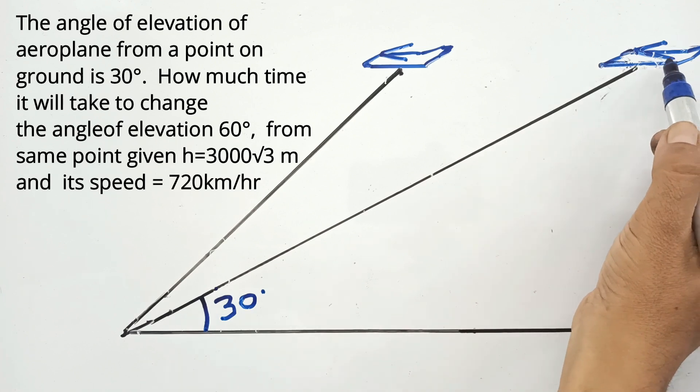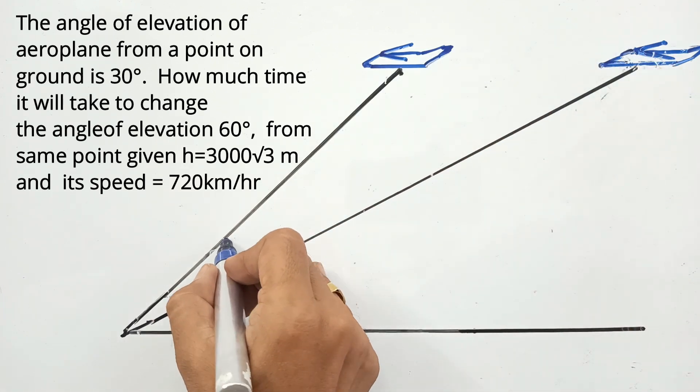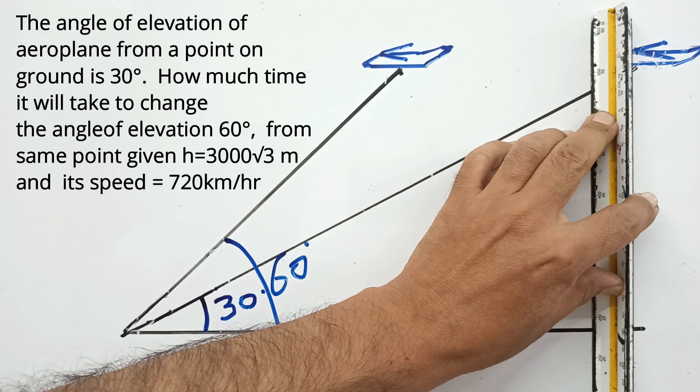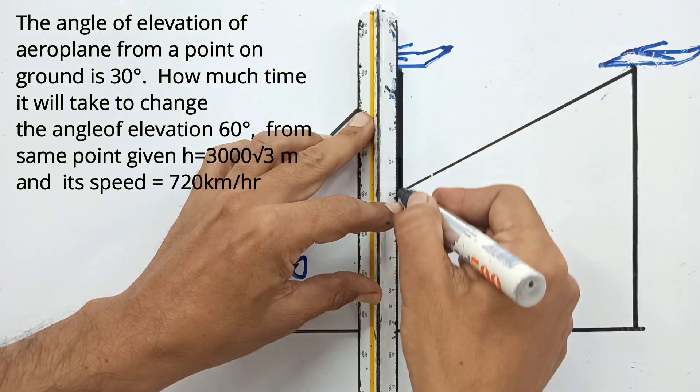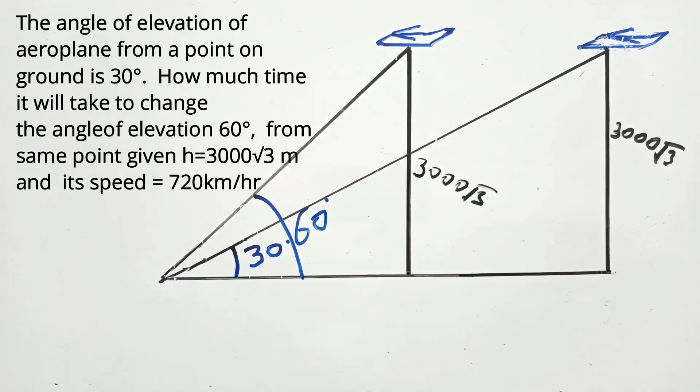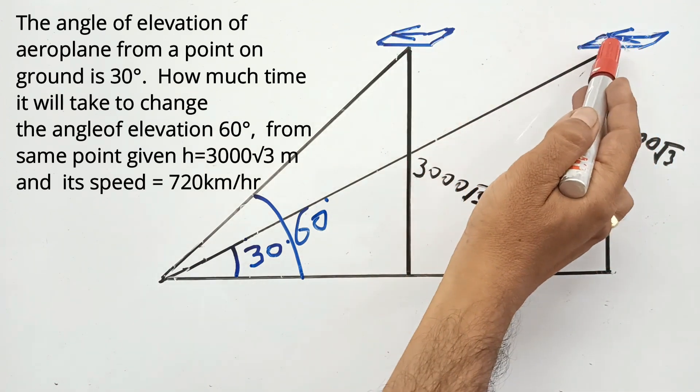Now listen students, this is the initial position of the aeroplane. After some time it will come to here and make the angle 60 degrees angle of elevation from the same point. Given that the height is 3000√3 meters, the constant height maintained by the aeroplane, we need to find the time taken by the aeroplane.